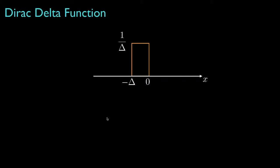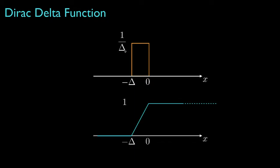Let's start by thinking about a simple rectangle function with a range from negative delta to 0 and a height of 1 over delta, so that its total area is equal to 1. If we think of this as a probability density function, then the cumulative distribution function would look like this — it would be 0 before negative delta and then increase linearly to a value of 1 at x equals 0.